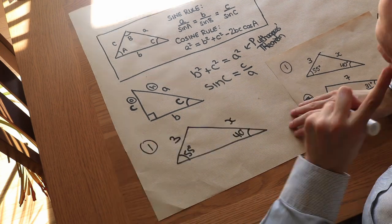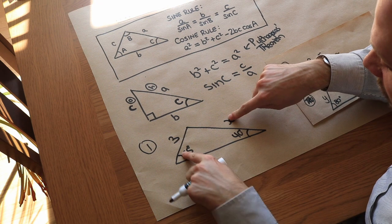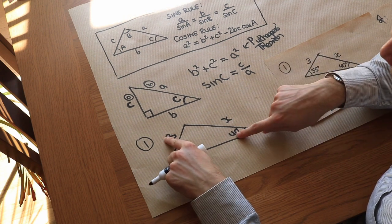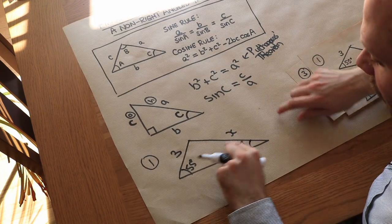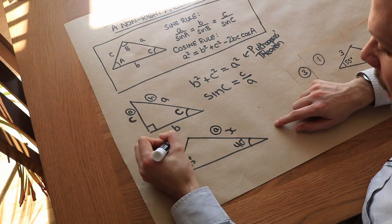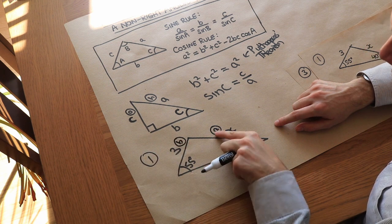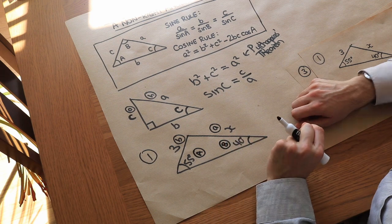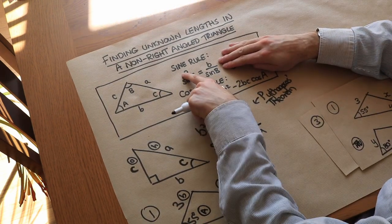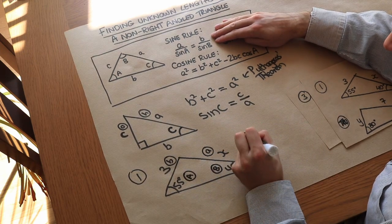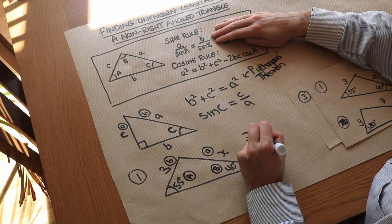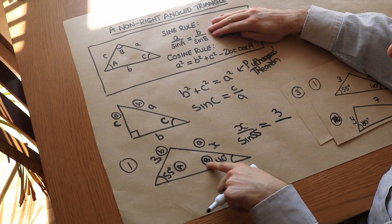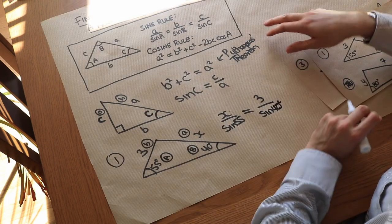Let's look at this first triangle. When you have two side-angle pairs — a side length and its opposite angle — we use the sine rule. I'll label the unknown side as little a (which is x) and the known side as little b (which is 3). The opposite angles are capital A (55°) and capital B (40°). So the sine rule gives us: x over sine 55 equals 3 over sine 40.